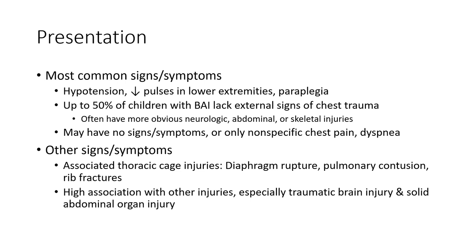Other signs and symptoms are associated with thoracic cage injury, including hemothorax, rupture, pulmonary contusion, and rib fracture. There is a high association with other injuries, especially traumatic brain injury and solid abdominal organ injury.